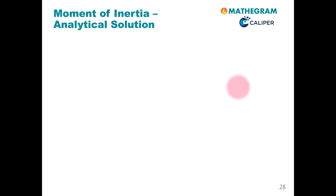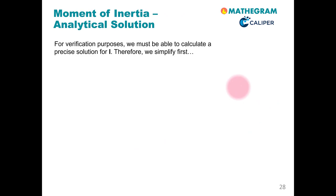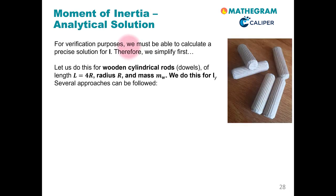Let us now look at an analytical solution. This is needed for verification purposes, for example. We need to also pick a concrete example. Here we have picked wooden cylindrical rods or dowels that are heavily used in the furniture industry. Let us assume that the length of these dowels is 4 times the radius of the dowel, and that the dowels have a mass of mw.